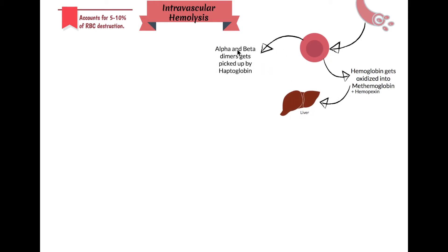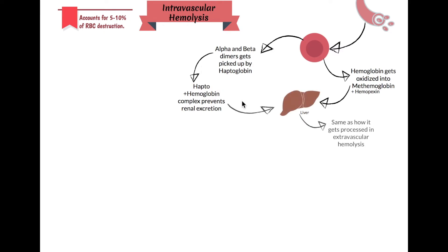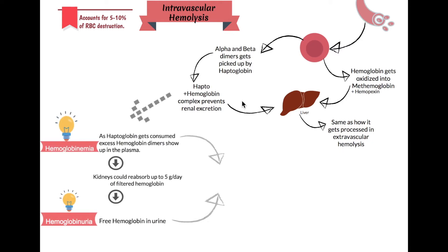The alpha and beta dimers of hemoglobin get picked up by haptoglobin. The haptohemoglobin complex is quite large, so it doesn't get excreted by the kidneys — it can't pass through the filter. It stays in the body, gets reabsorbed, and is taken into the liver, where it gets processed similarly to what we saw in extravascular hemolysis.